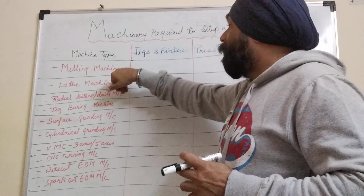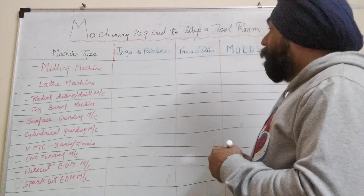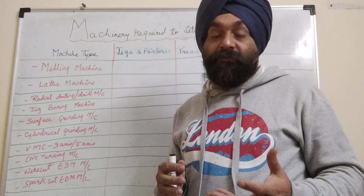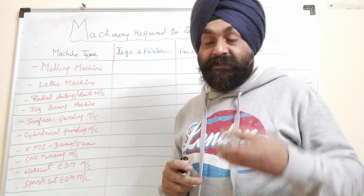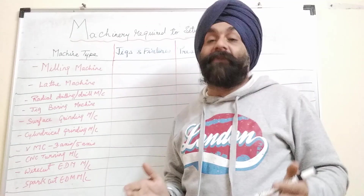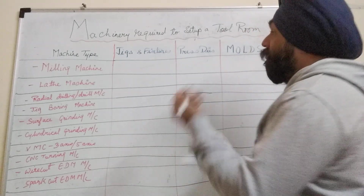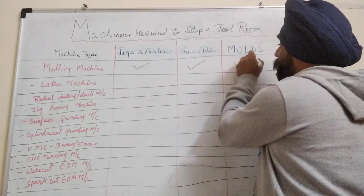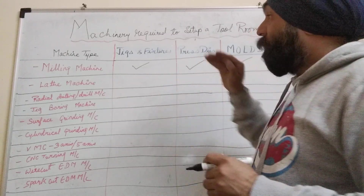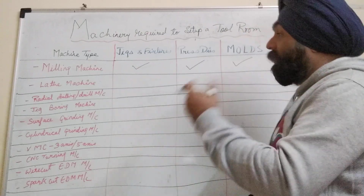The first machine is the milling machine. It is required for pre-machining of parts — giving the right angle to plates, pre-machining, and slotting. The milling machine is required for all three variants: jigs and fixtures, press dies, and molds.